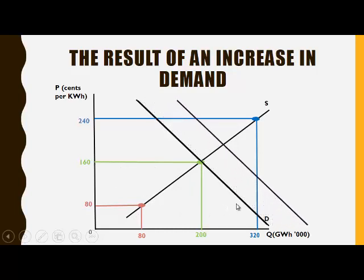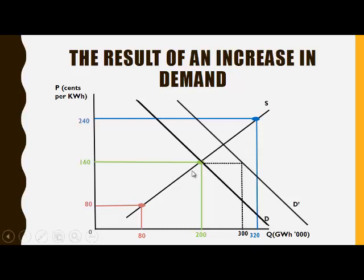Now there is an increase in demand which results in a rightward shift of the demand curve. At the original price of 160, the quantity demanded will now be 300, while the quantity supplied at a price of 160 remains 200.